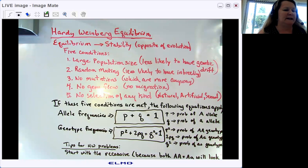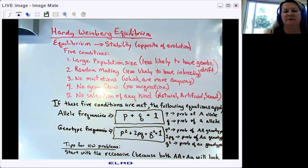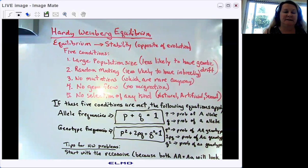So if you take a look at the screen here, I start out by reminding them about how evolution is change. And Hardy-Weinberg equilibrium, I ask them, what does the word equilibrium mean? Well, equilibrium implies balance or stability. So in a way, we can think of Hardy-Weinberg equilibrium being a condition that's the opposite of evolution, when a population is stable and is not changing.